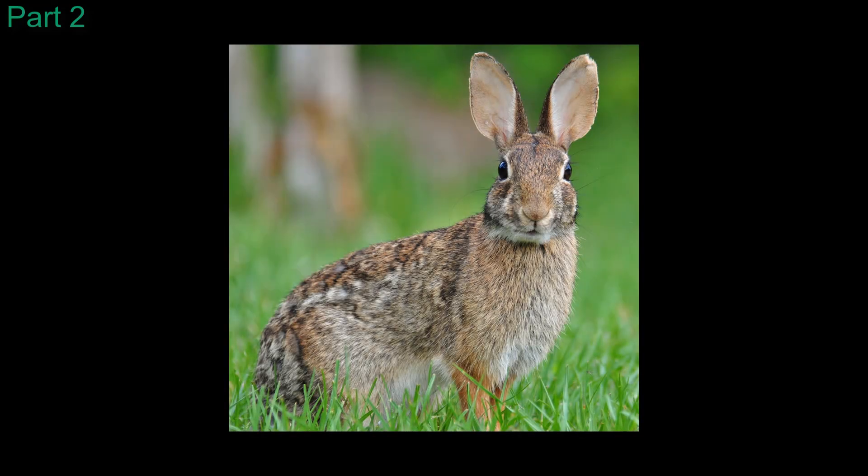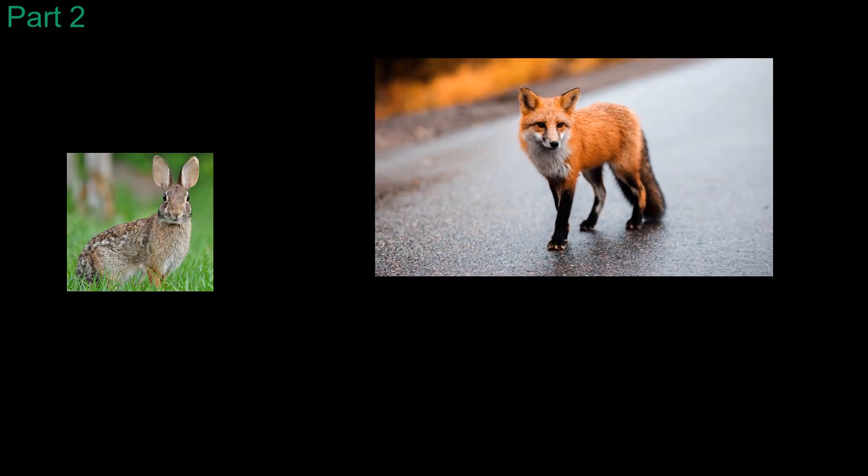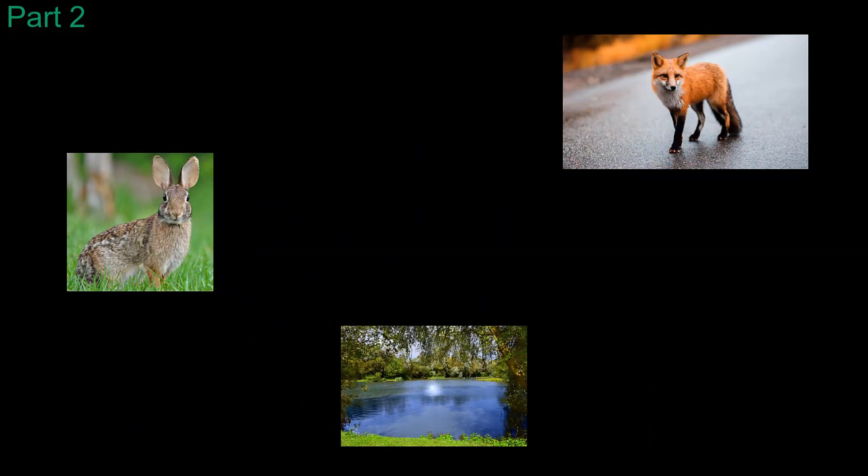Let's look at an example of interactions between a cottontail rabbit, a red fox, and a pond of natural water. All three of which can be found in the ecosystem that I live in in the Chicagoland area.